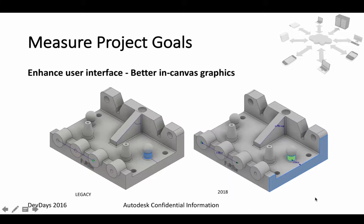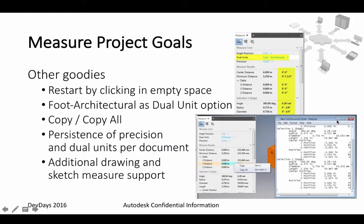Here is a comparison between the current user interface and the new in-canvas graphics in the oncoming release of Inventor — much nicer feedback for the user. Some other nice features related to these commands: restart by clicking in empty space, foot architecture as dual unit option, copy all the information the measure command gathered, persistence of precision and dual units per document. Whatever unit you chose when using the measure command will be saved inside the document, so you don't have to keep setting it.